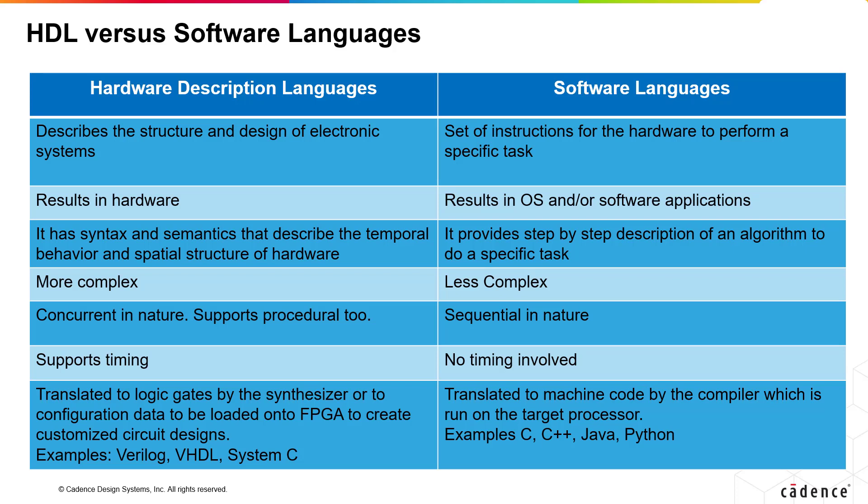Software code gets translated to machine code by the compiler, which is run on the target processor. Examples include C, C++, Java, Python, etc.